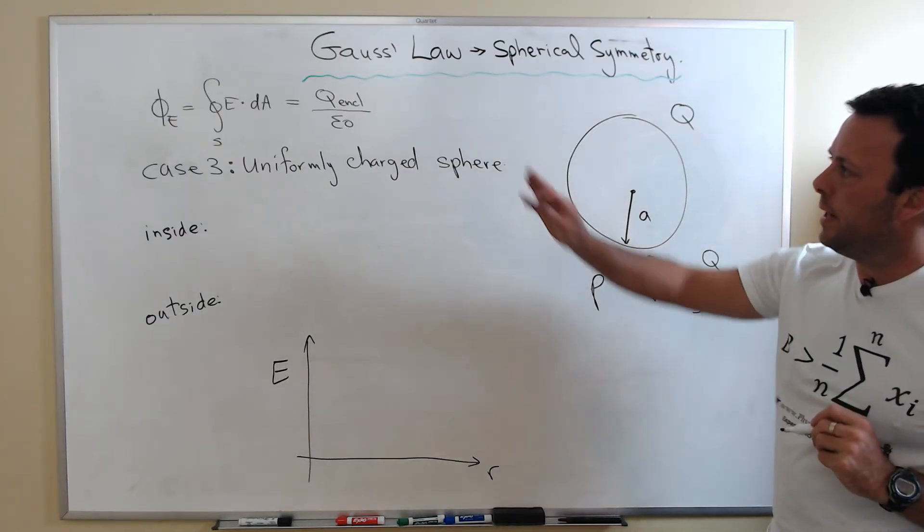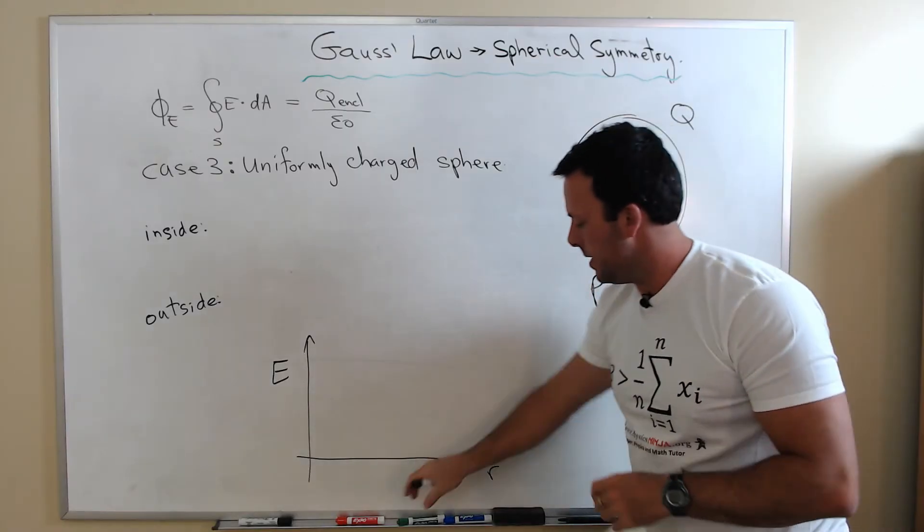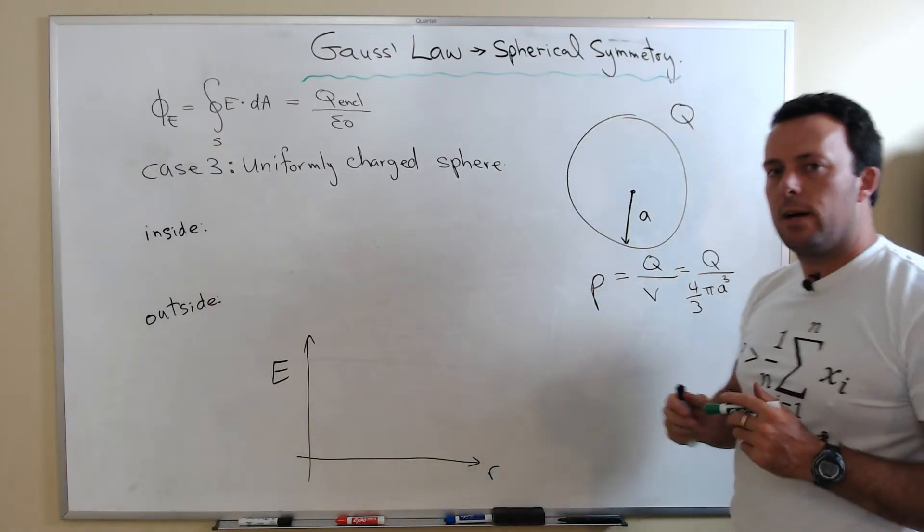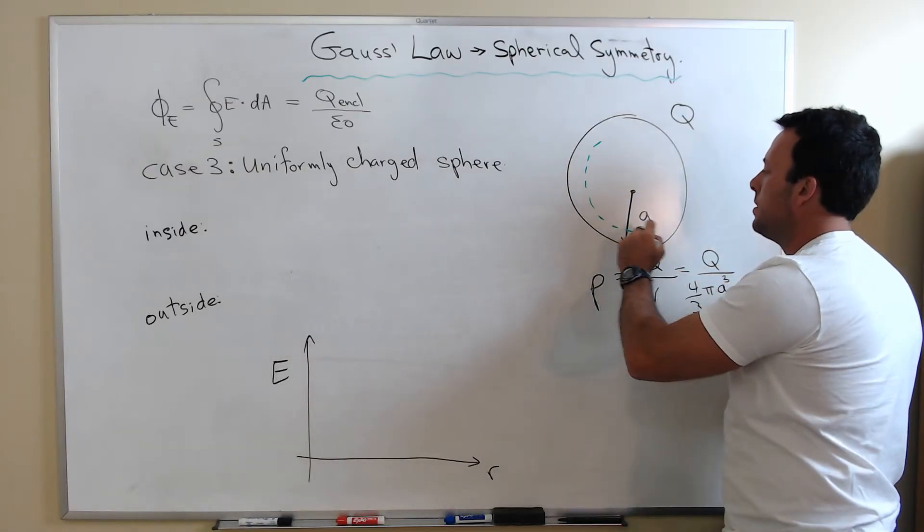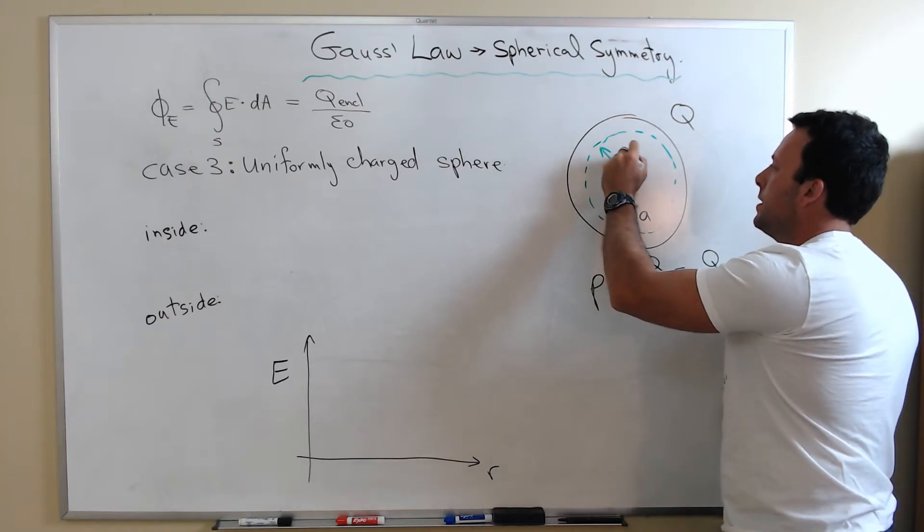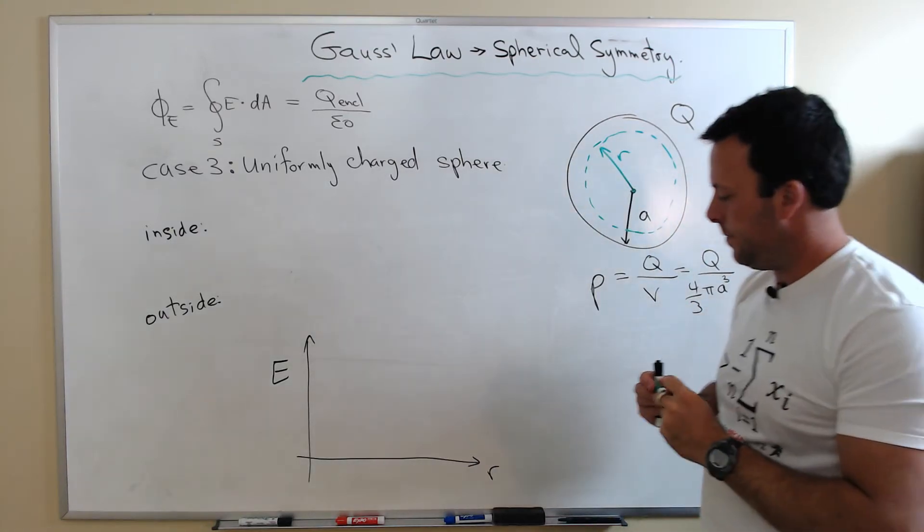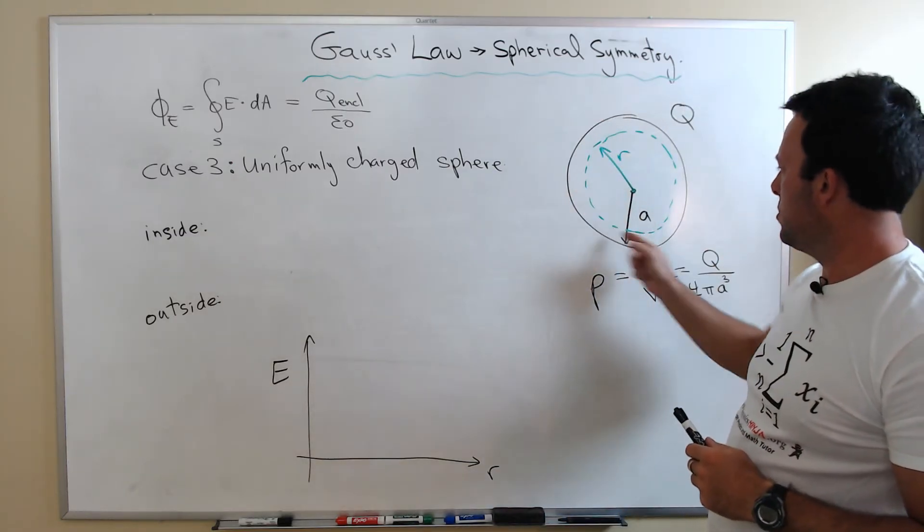Now we want to apply Gauss's Law to this specific case. Let's start with the inside. If I want to apply Gauss's Law to the inside, I have to choose a Gaussian surface that is inside. For the green Gaussian surface, it's going to have a radius R. Let's apply Gauss's Law to this surface.